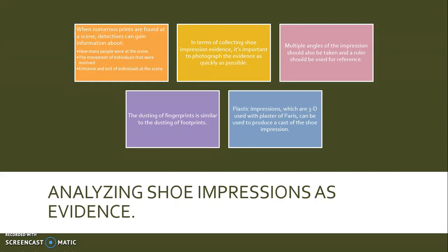When numerous prints are found at a scene, detectives can gain information about how many people were there, the movement of individuals, and the entrance and exit of individuals. It's important to photograph the evidence as quickly as possible, as it could disappear due to rain, mud, snow, or contamination from people walking through the area. Multiple angles should be taken and a ruler used for reference. The dusting of footprints is similar to fingerprints. Plastic impressions can use plaster of Paris to produce a cast of the shoe impression.